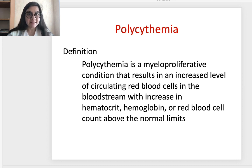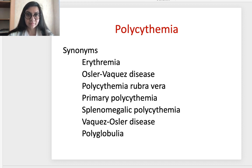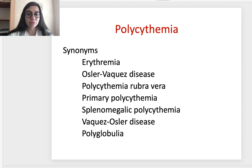The next syndrome is polycythemia. What is polycythemia? It is a myeloproliferative condition that results in an increased level of circulating red blood cells in the bloodstream, with increases in hematocrit, hemoglobin, or red blood cell count above normal limits. Synonyms you may encounter in literature include erythraemia, Osler-Vaquez disease, polycythemia rubra vera, primary polycythemia, splenomegalic polycythemia, Vaquez-Osler disease, and polyglobulia.